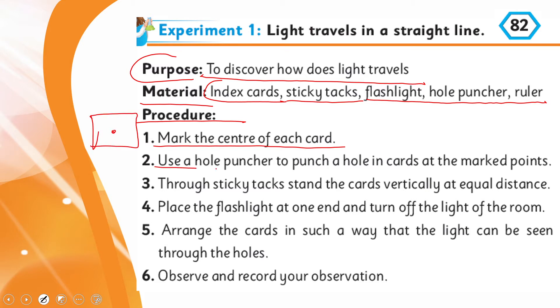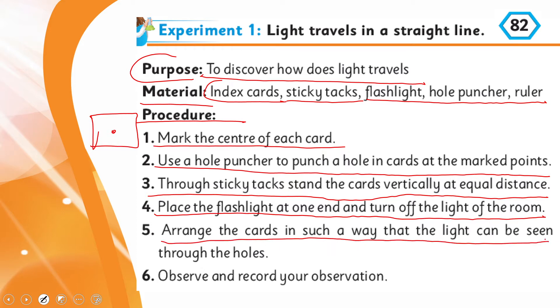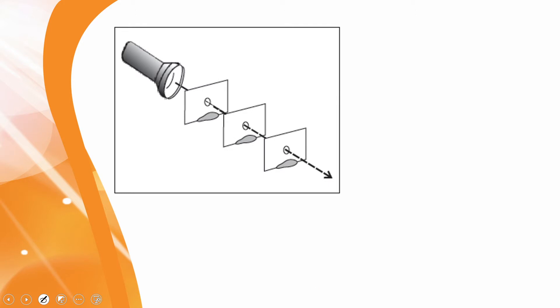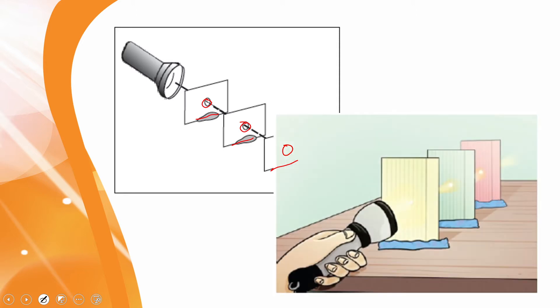The procedure is: mark the center of each card. Use a hole puncher to punch a hole in cards at the marked points. Through sticky tags, stand the cards vertically at equal distance. Place the flashlight at one end and turn off the light of the room. Arrange the cards in such a way that the light can be seen through the holes. We will place three cards at equal distance and after turning off the lights, we will see through the flashlight from one hole towards the other hole if light is traveling in a straight line. Observe and record your observations. The holes should be equally marked in the center and at equal distances.